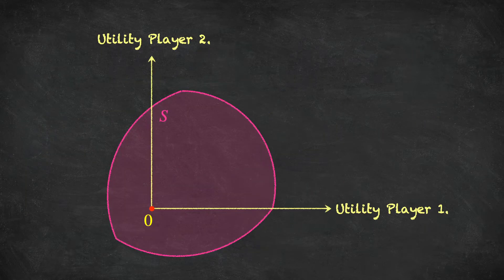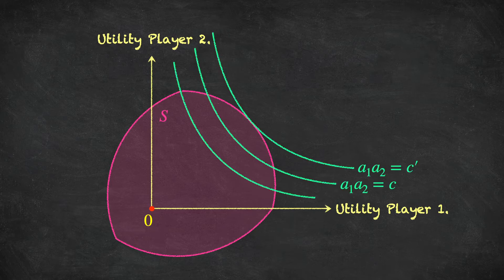Graphically, we can represent the Nash bargaining solution as follows. Here is a typical bargaining problem with bargaining set S — this pink shaded area including the boundary. If we look at curves where the Nash products are constant, A1 times A2 is constant along each of these curves, then the Nash solution chooses the alternative that belongs to S that maximizes the Nash product, which is this point here labeled N of S.